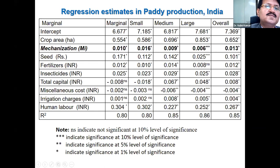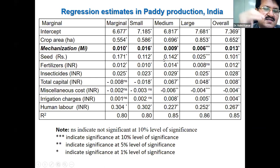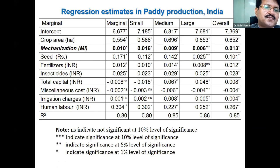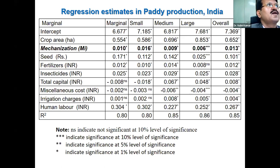This indicates that mechanization is significantly contributing to paddy production. Not only mechanization but other factors also impact production, but this clearly shows the effect of mechanization on paddy production. A similar kind of result was found for wheat production as well.